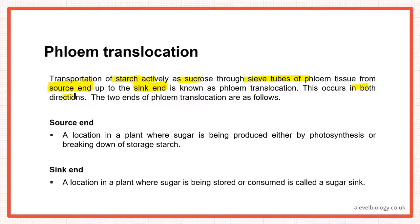The source end is where sugar is being produced — either by photosynthesis or by breaking down storage. Generally, a leaf doing photosynthesis is the source end, but it can also be a tuber where starch is broken down into maltose and then glucose for aerobic cellular respiration. So the source end is either the site of sugar production or the site of storage breakdown.